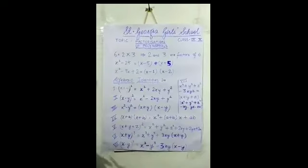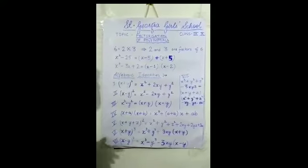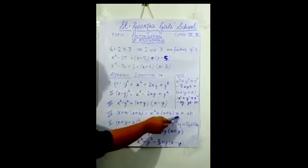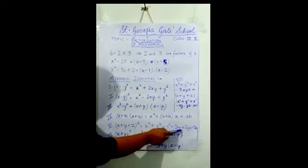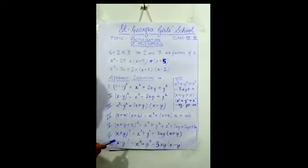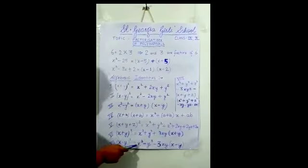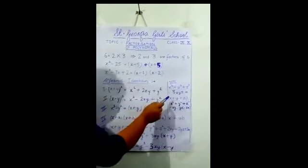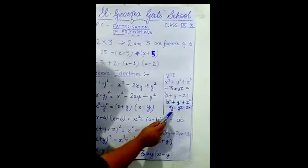Quick recap: (x plus y)² = x² + y² + 2xy. (x minus y)² = x² - 2xy + y². x² - y² = (x plus y)(x minus y). (x plus a)(x plus b) = x² + (a plus b)x + ab. (x plus y plus z)² = x² + y² + z² + 2xy + 2yz + 2zx. (x plus y)³ = x³ + y³ + 3xy(x plus y). (x minus y)³ = x³ - y³ - 3xy(x minus y). x³ + y³ + z³ - 3xyz = (x + y + z)(x² + y² + z² - xy - yz - zx).